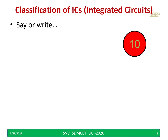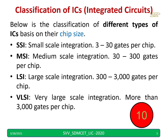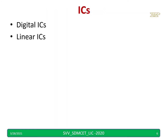How do we classify ICs? Based on chip size, we have SSI — small scale integration — MSI, LSI — large scale integration — and VLSI — very large scale integration. And based on operations, we can classify digital ICs and linear ICs.